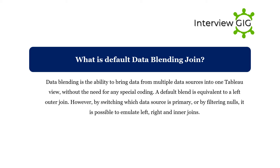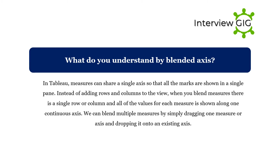What is default data blending join? Data blending is the ability to bring data from multiple data sources into one Tableau view without the need for any special coding. A default blend is equivalent to a left outer join. However, by switching which data source is primary or by filtering nulls, it is possible to emulate left, right, and inner joins.